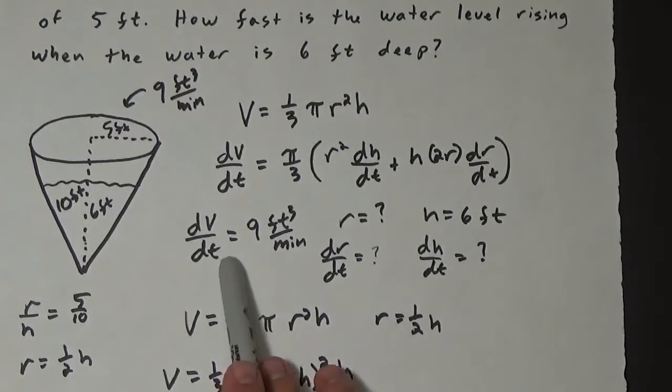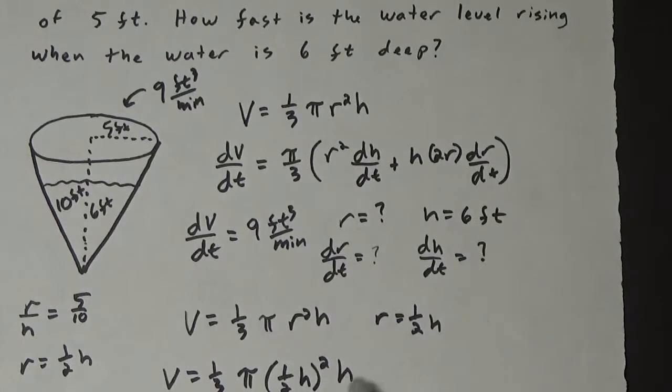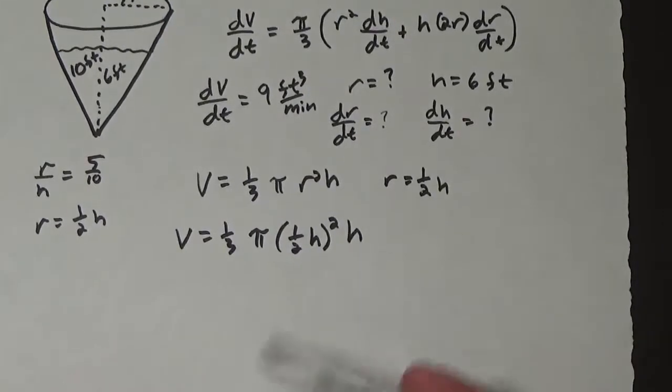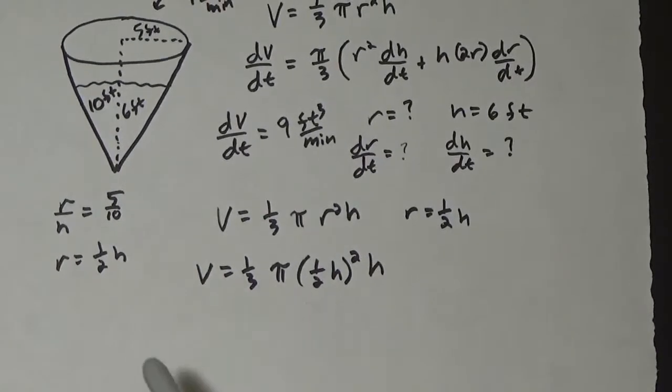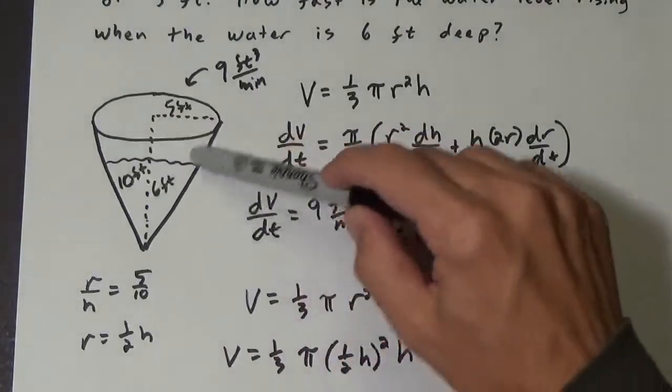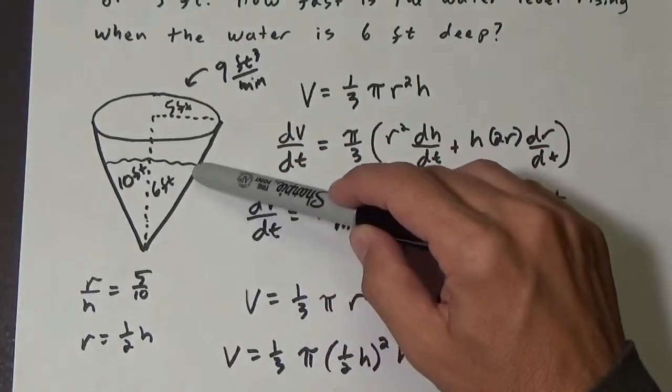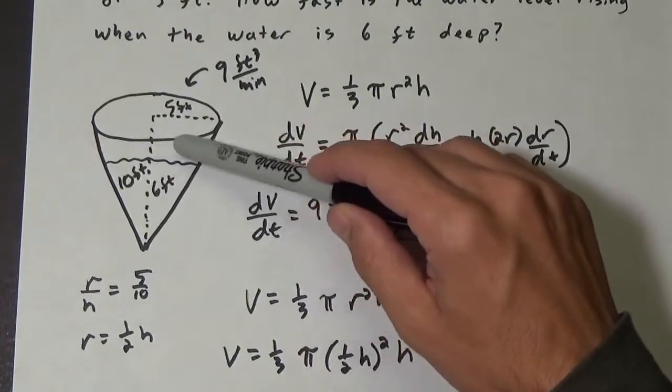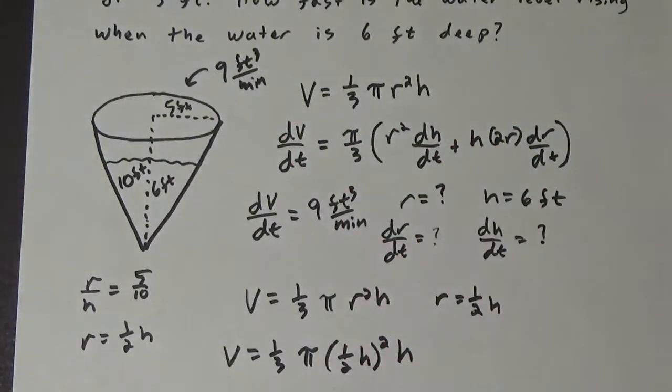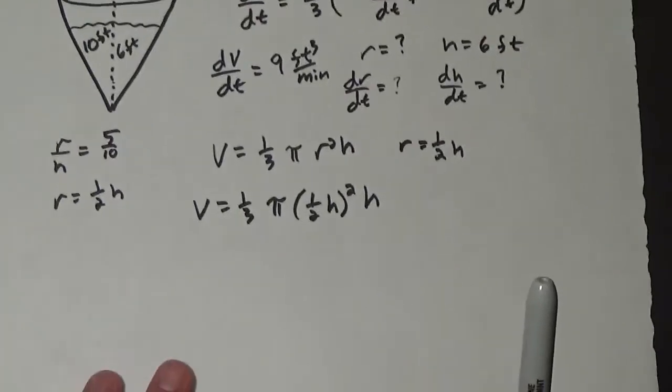And we've already looked at this. We know we need dv dt. We know we're gonna need h, and dh dt is what we're looking for. So this one is actually gonna have all the information, or we will have all the information we need for that. Now, please remember in future questions that involve a cone, that this 1 half h only is based on this particular cone. If the radius or height ever changes, then that ratio might be different.